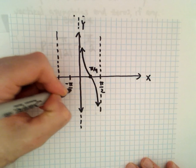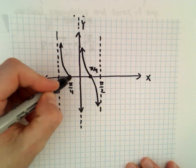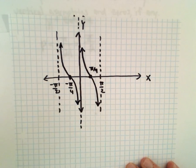Likewise, this is the point negative pi over 4. It's going to increase and then decrease.